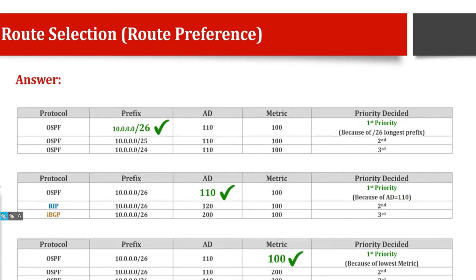So here, the first priority will be given to the longest prefix. But out of those three, the first one will be given to the longest prefix. If prefixes are same, you can see all are same, then it will go for the admin distance. But if admin distances are same, it will go for the last option, which is the metric.